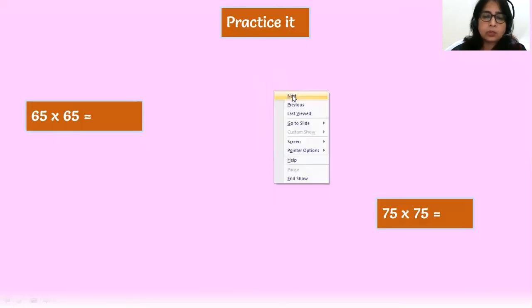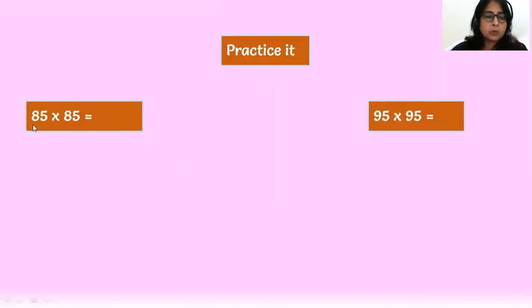So, just do these two questions from yourself. The successor of 8 is 9. 8 into 9, 72. And 5 into 5, 25. 7225 is the answer. The successor of 9 is 10. So, 9 into 10, 90. And 5 into 5, 25. 9025 is the answer. So nice. So amazing. I hope so.